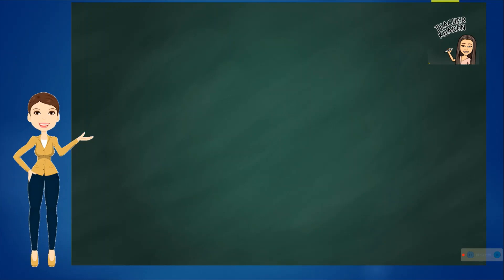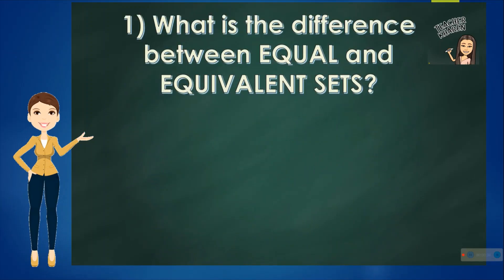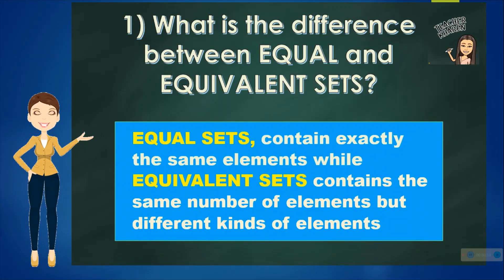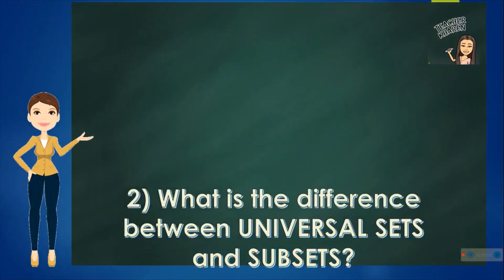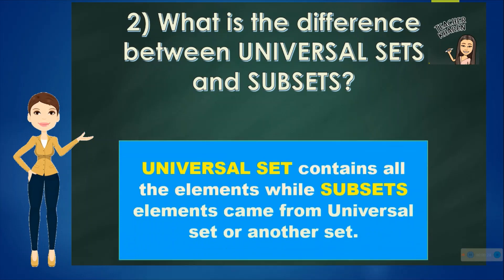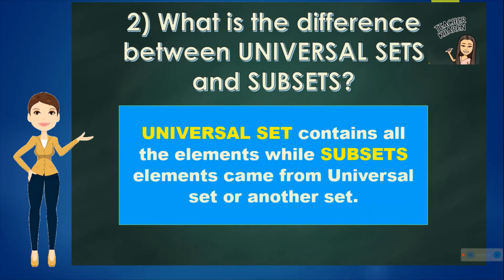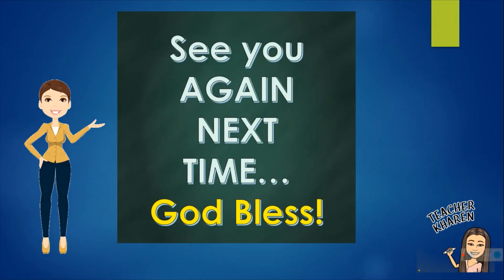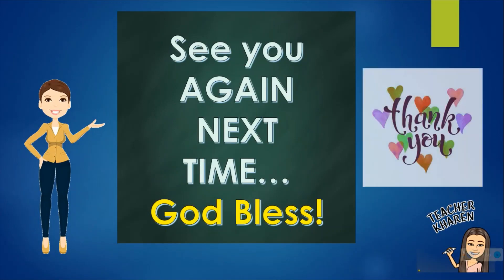Let us review. What is the difference between equal and equivalent sets? Equal sets contain exactly the same elements, while equivalent sets contain the same number of elements but different kinds of elements. What is the difference between universal sets and subsets? Universal sets contain all the elements, while subset elements come from a universal set or another set. See you again next time. God bless and thank you.